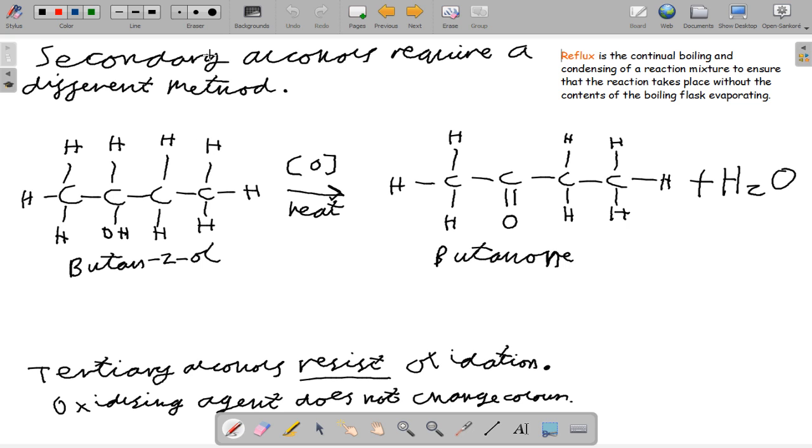For the secondary alcohols, they can be oxidized by using dichromate ions again, but this time they produce ketones, where a double bond of oxygen is present on a single carbon atom, and another water molecule is pulled off. We use this example, butan-2-ol with this OH group here, and the oxidizing agent, which is potassium dichromate, and we make butanone with the ketone on carbon-2.